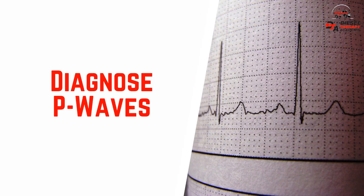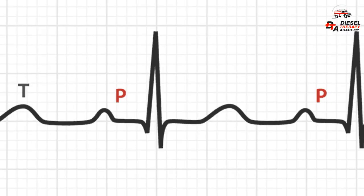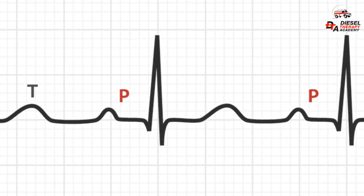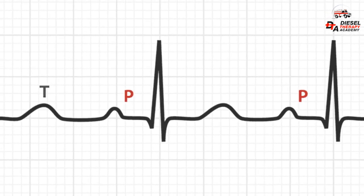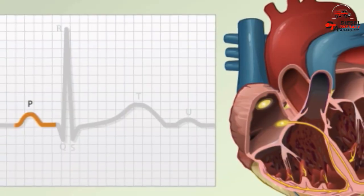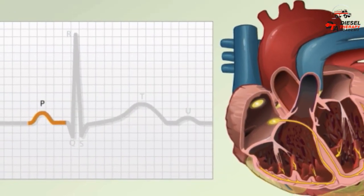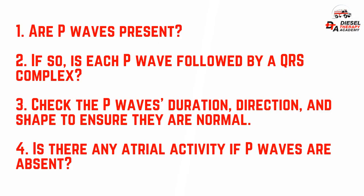Diagnose P-waves. The P-wave represents the depolarization of the atria, the two upper chambers of the heart, which receive blood from the vena cava and pulmonary veins. Examine the P-waves and answer the following questions: (1) Are P-waves present? (2) If so, is each P-wave followed by a QRS complex? (3) Check the P-wave's duration, direction, and shape to ensure they are normal. (4) Is there any atrial activity if P-waves are absent?